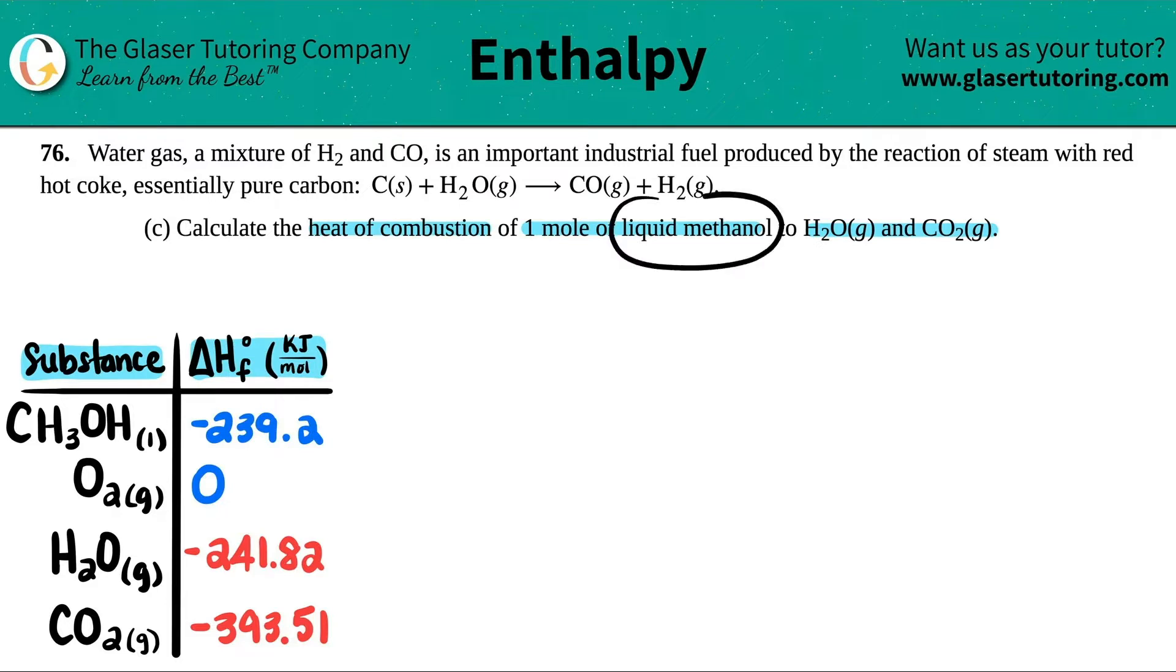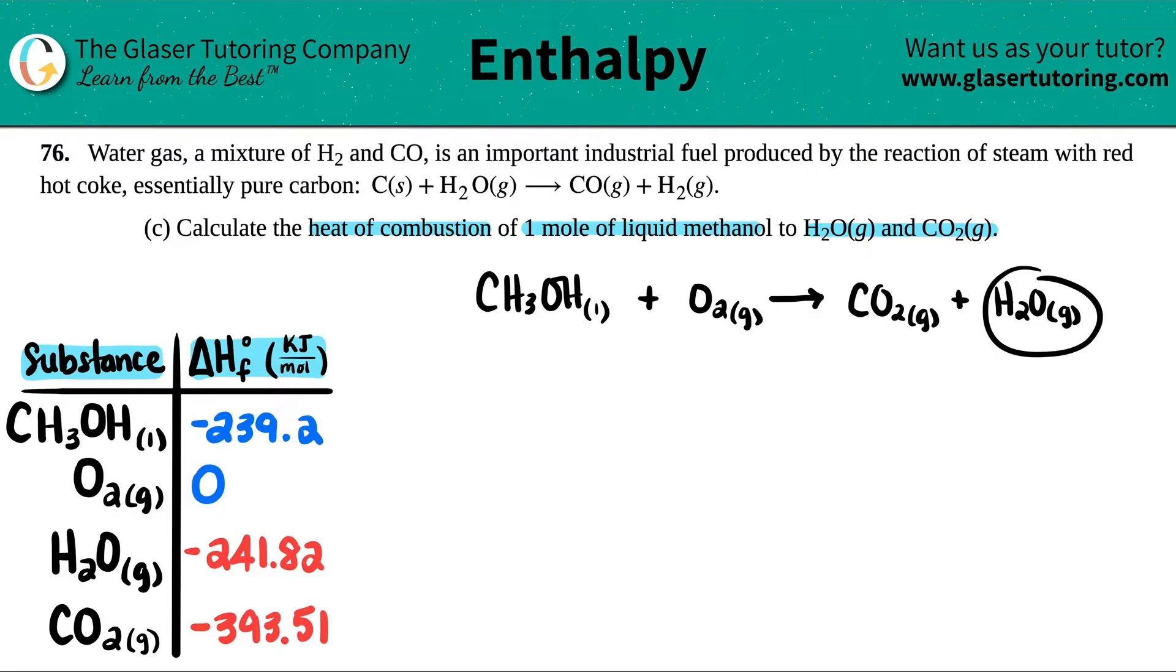Liquid methanol is CH3OH as a liquid. Whenever you're burning something, doing a combustion reaction, you're always adding O2 gas—it has to be burned in air. Then you will produce CO2 gas plus H2O gas. During combustion, you're always producing water vapor, not liquid water. If you see a fire burning, you don't see water shooting out—the water is in gas form, not liquid form.